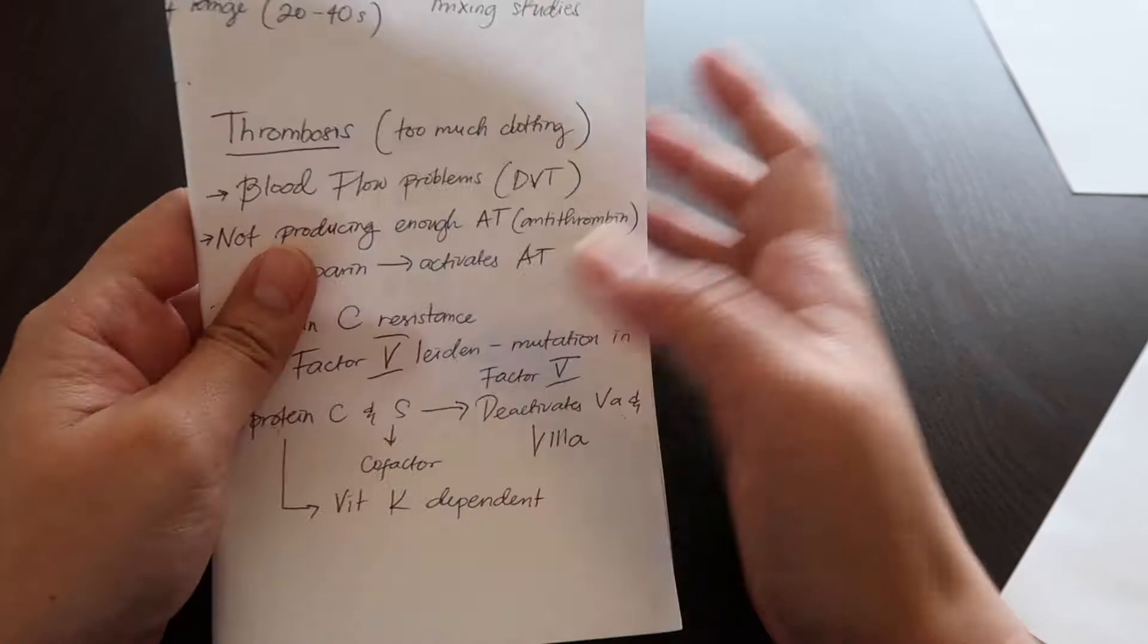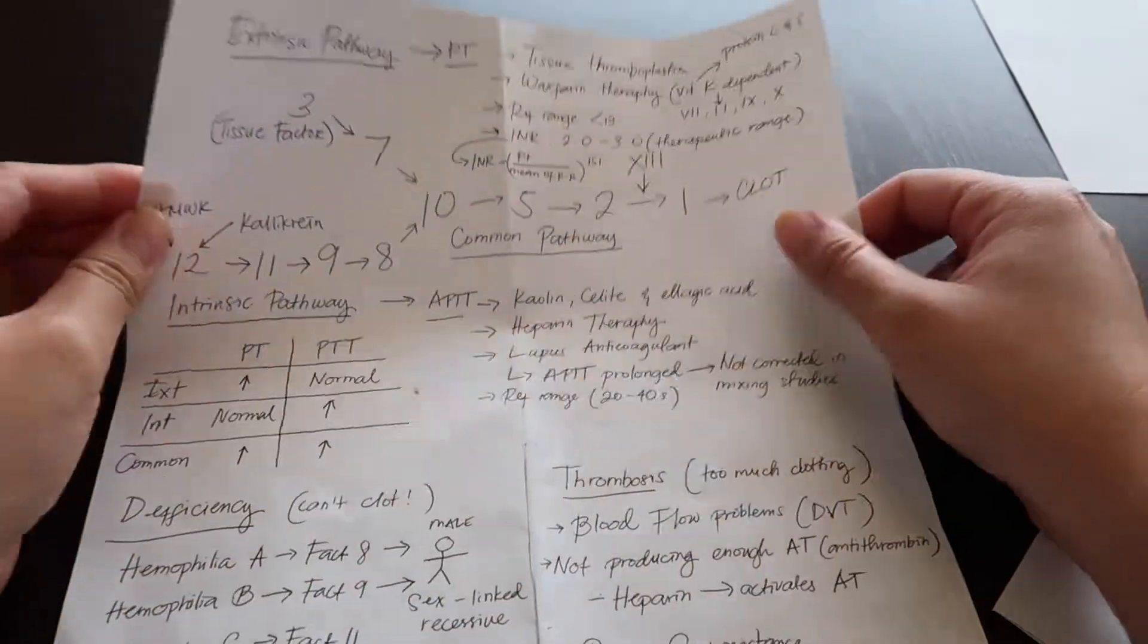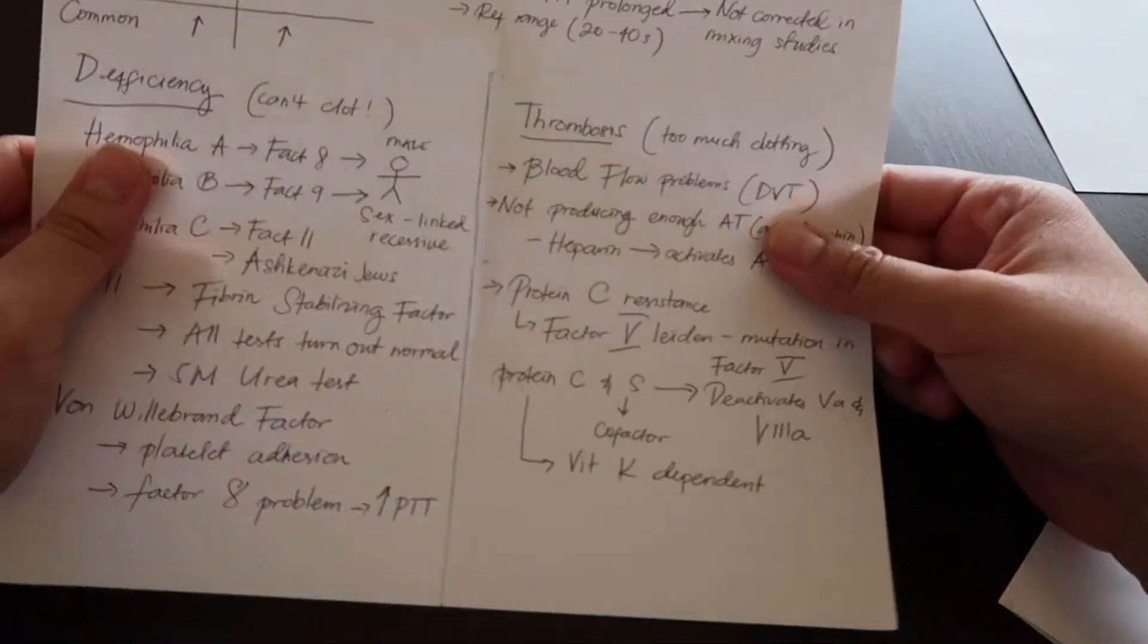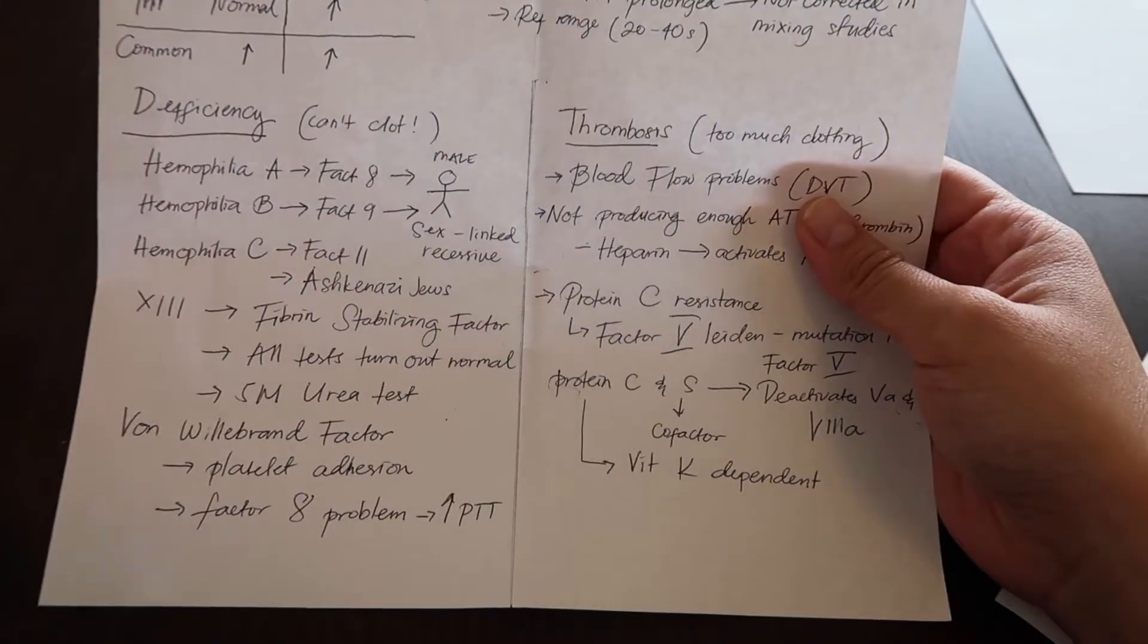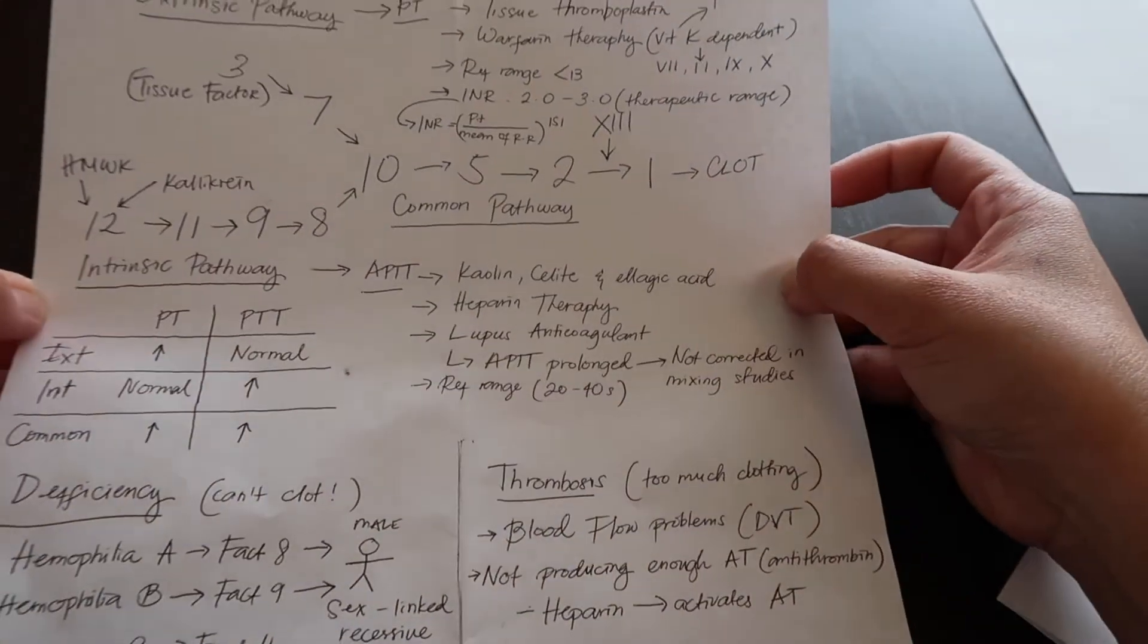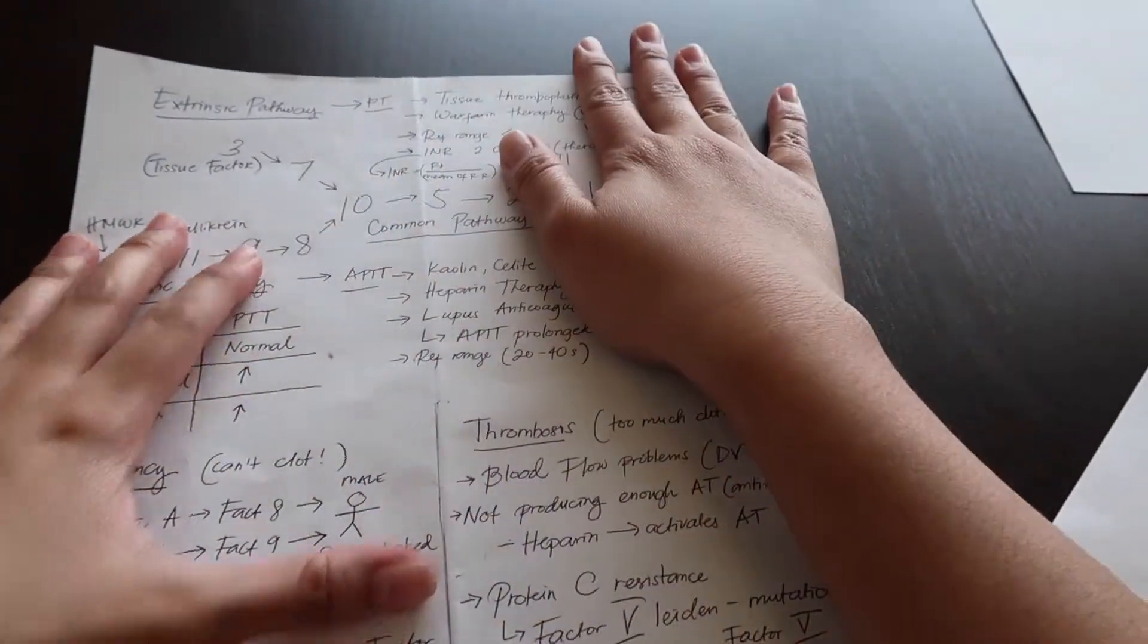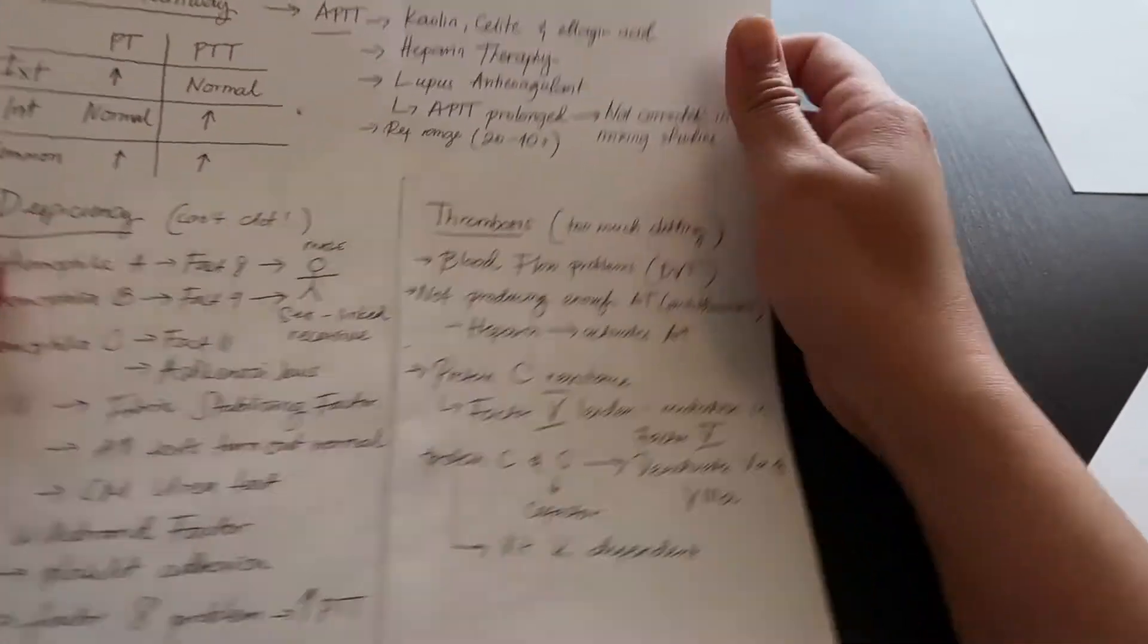And that's it, we're done. We finally finished the whole coagulation cascade and its problems. Hopefully this video helps you review for the ASCP and hopefully I gave some enough hints of where and how to study for this. I will post this up on my website. I will post this study guide. It's very short, it's very concise.